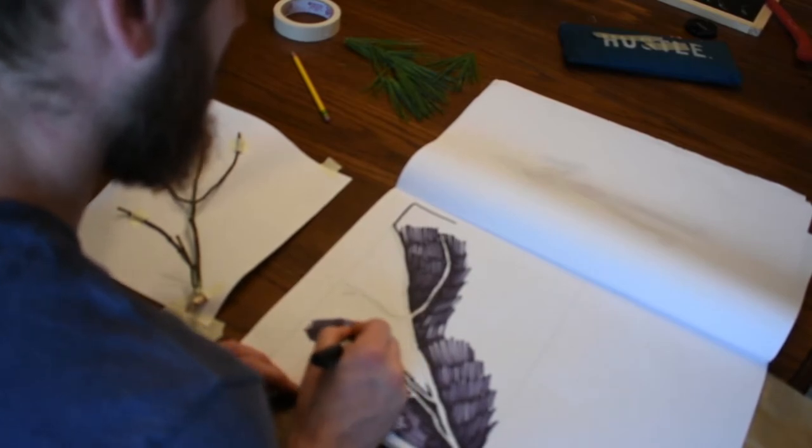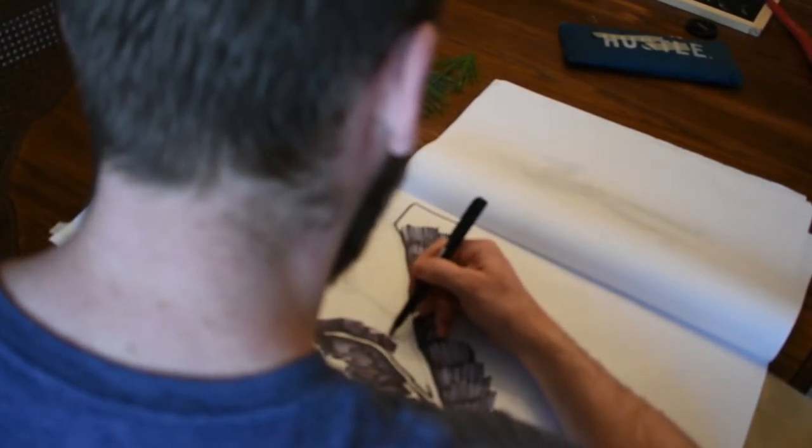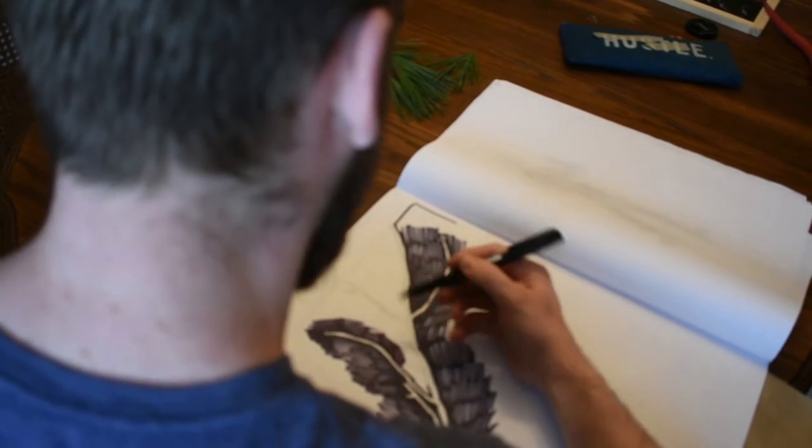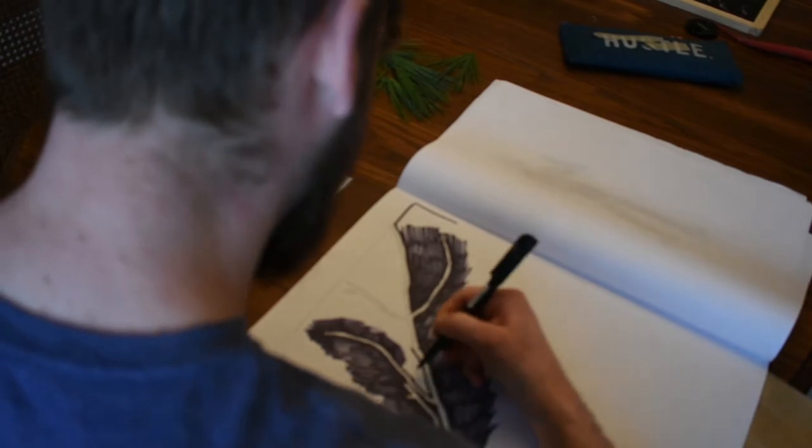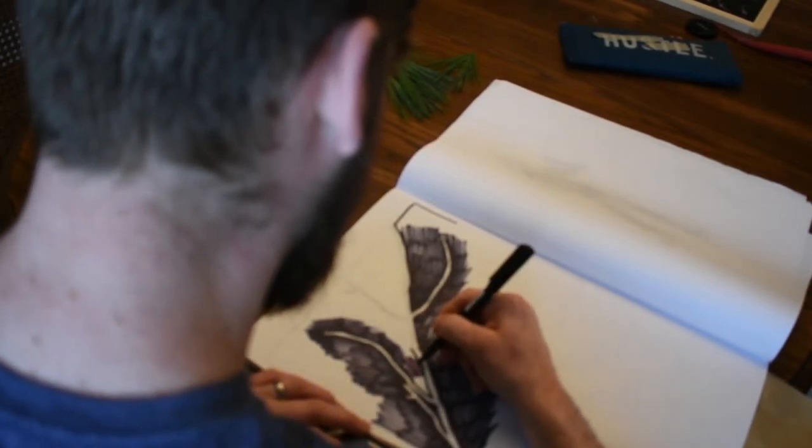So if you feel like the smudginess or the quality of the marker is unsightly, you can always go over that later or go slower and do it more evenly. I was just doing it for the sake of getting those shapes down.